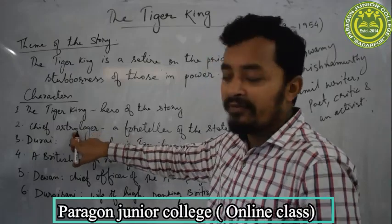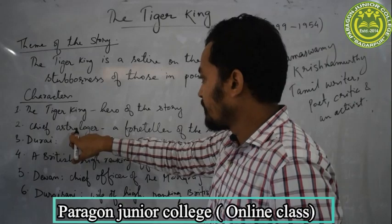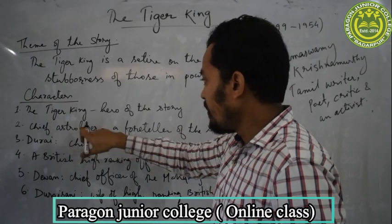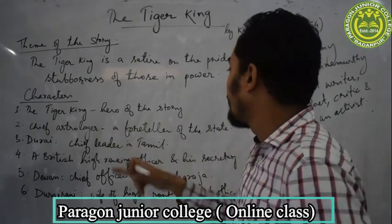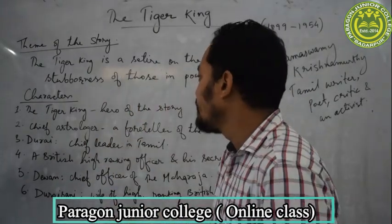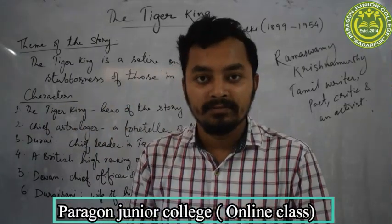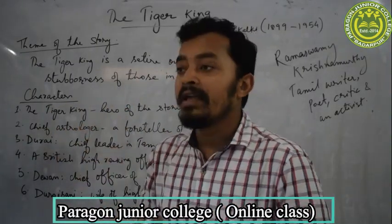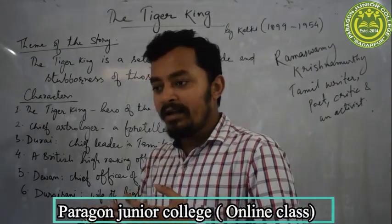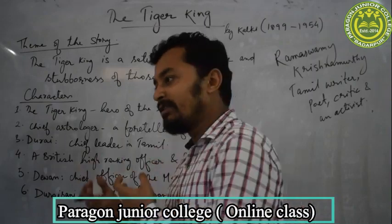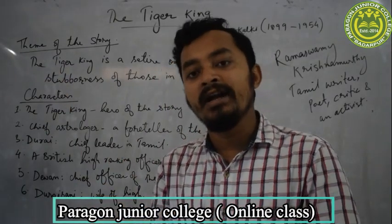The next character is the Chief Astrologer — a fortune teller or foreteller of the state. When the king was born, in this story you will see the Chief Astrologer had predicted that the king would die because of a tiger.